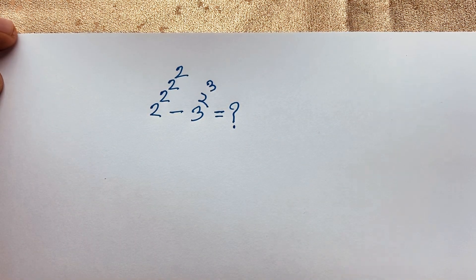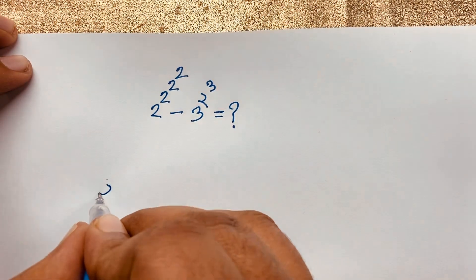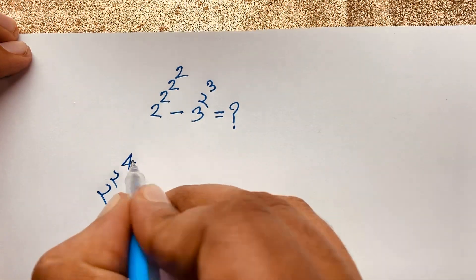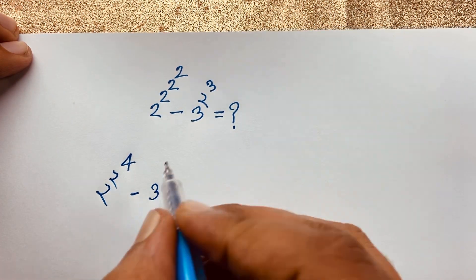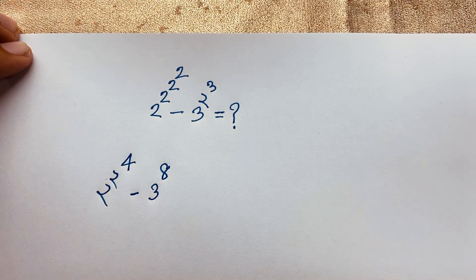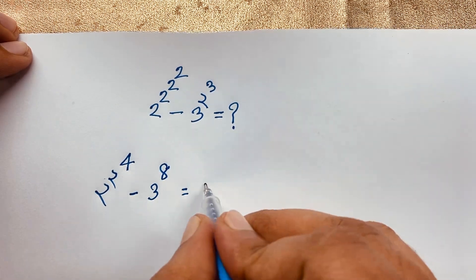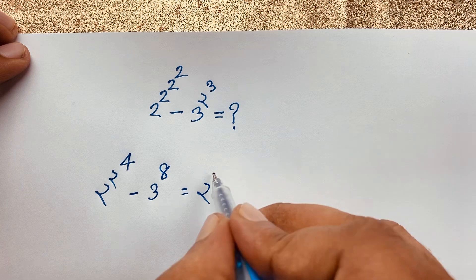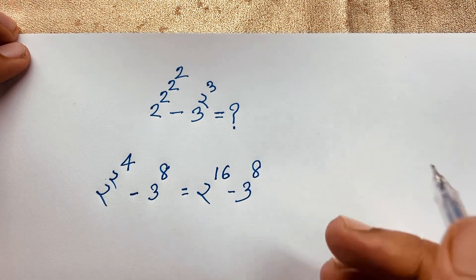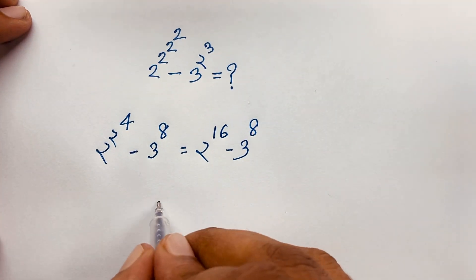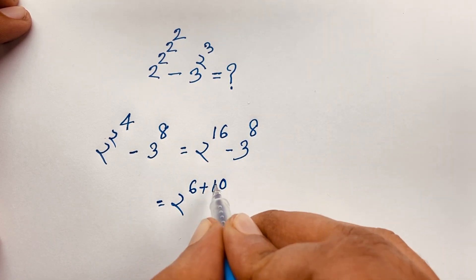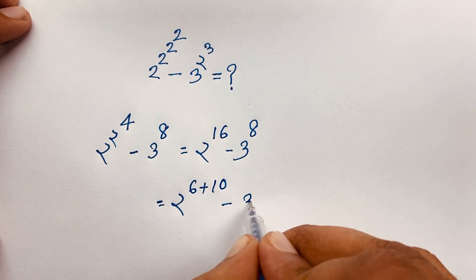First of all, I can see this expression: 2 to the power of 2 to the power 2, which is 4. And in this expression, 3 to the power 3 will be 8. So now we have 2 to the power 2 to the power 4, which will be 16. And we have negative 3 to the power 8. So this becomes 2 to the power 16, which equals 6 plus 10 — that is, 2 to the power 16 minus 3 to the power 8.